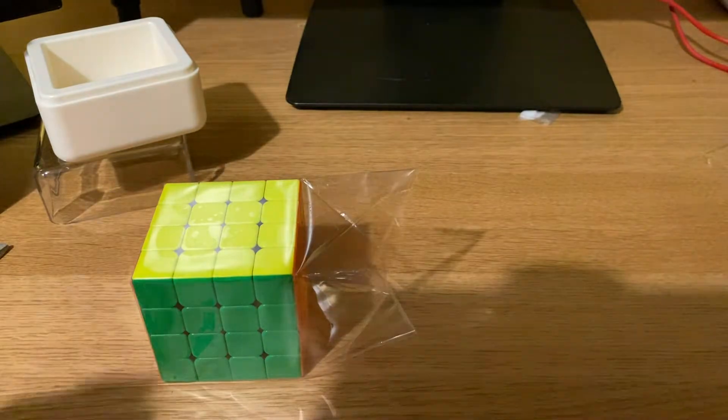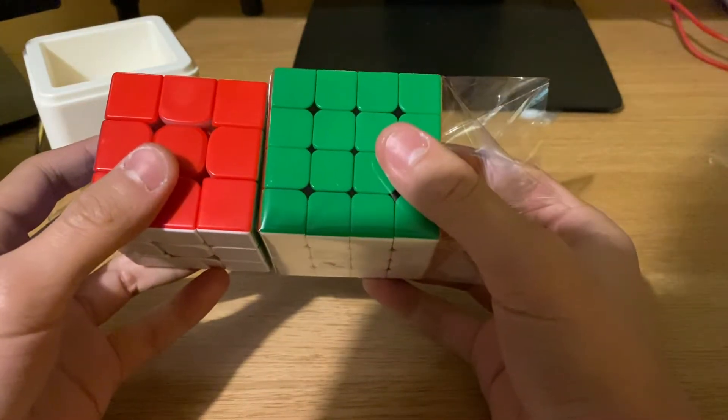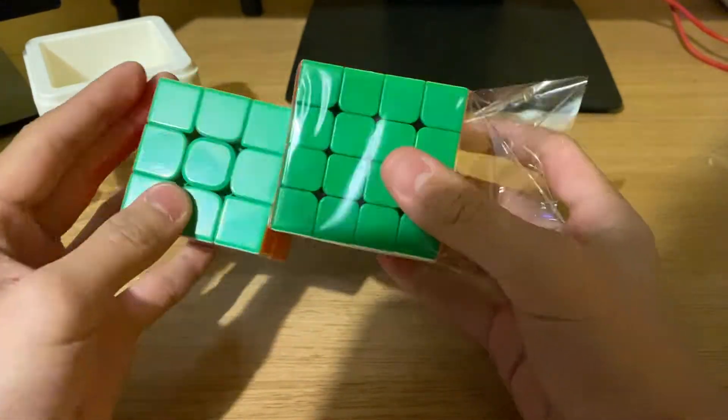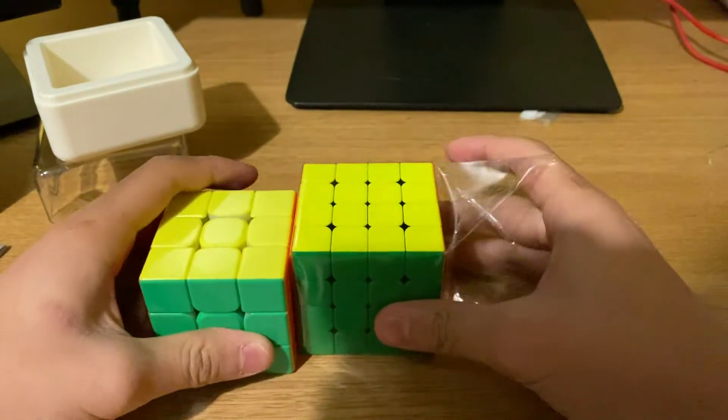Let me grab my 3x3. Let me compare the size. So this is the 3x3, this is my Dian Tangan, and this is the 4x4. Looks roughly about 60 millimeters.